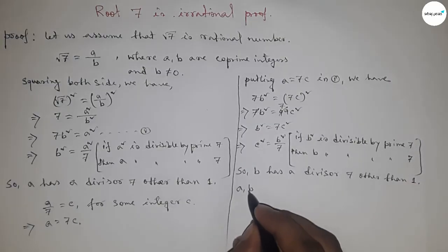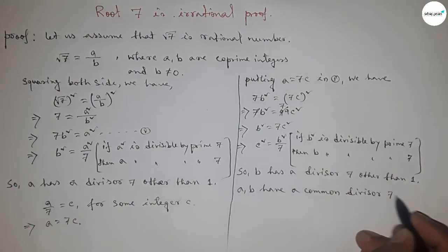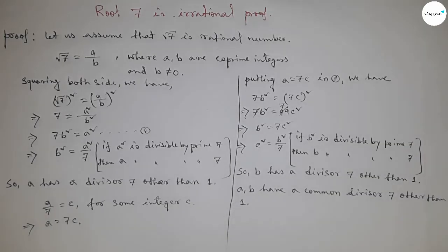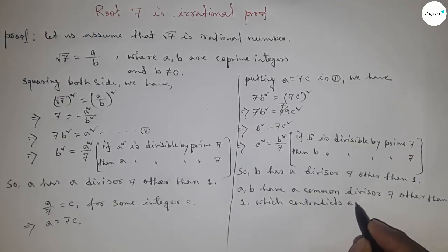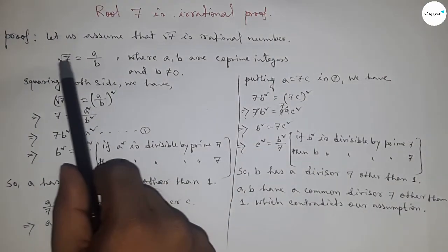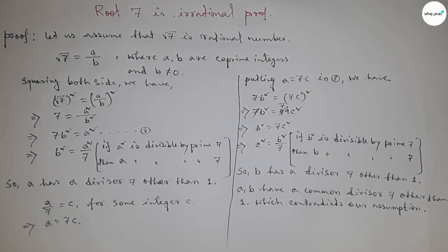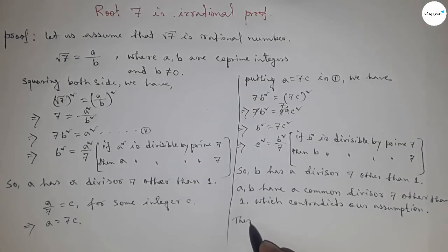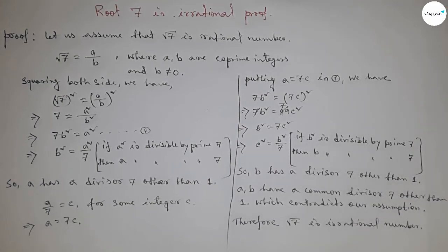So we got two common divisors: 7 and 1. But we first assumed that a and b have only one common divisor, which is 1. This contradicts our assumption that root 7 is a rational number and that a and b are co-prime. Therefore, root 7 is not a rational number. Hence, root 7 is an irrational number. That's all, thanks for watching — please subscribe, like, and comment on my video.